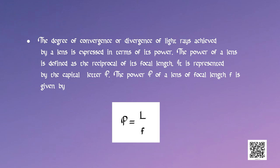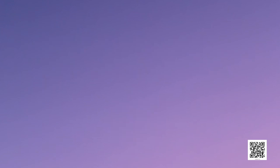The power P of a lens of focal length f is given by P equals 1/f. The SI unit of power of a lens is diopter, denoted by capital D. The net power P of lenses placed in contact is given by the algebraic sum of the individual powers P1, P2, P3, etc.: P equals P1 plus P2 plus P3 and so on.